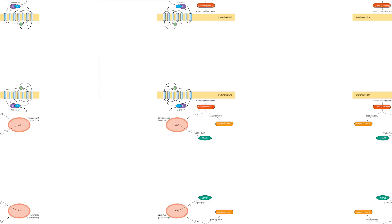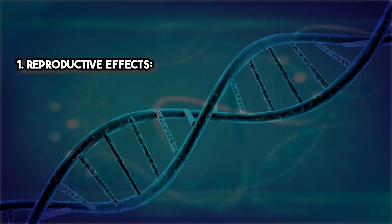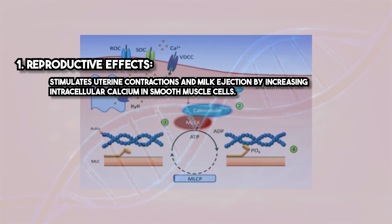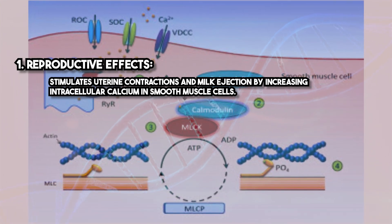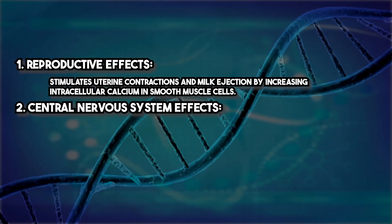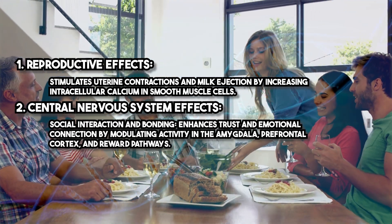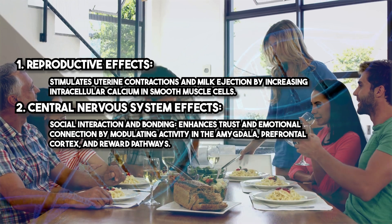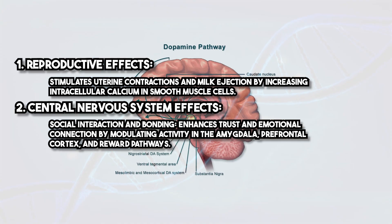Oxytocin exerts its effects through binding to oxytocin receptors, which are G-protein-coupled receptors expressed in the uterus, brain, heart, and other tissues. Reproductive effects: it stimulates uterine contractions and milk ejection by increasing intracellular calcium in smooth muscle cells. Central nervous system effects on social interaction and bonding: it enhances trust and emotional connection by modulating activity in the amygdala, prefrontal cortex, and reward pathways.